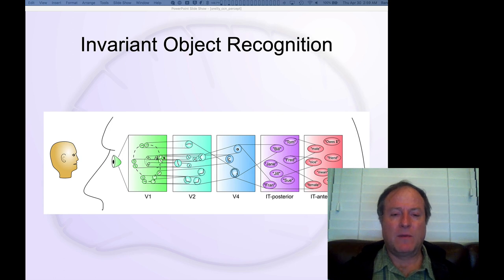We've talked about this figure many times and now we'll finally get a chance to see the simulation that captures this phenomenon of going from basic oriented edge features in V1 up to high-level object representations in higher levels of infratemporal cortex.